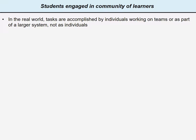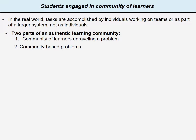The third component of authentic learning is that students engage in discourse and social learning in a community of learners. In the real world, tasks are accomplished by individuals working on teams or as part of a larger system, and not as individuals. In the case of authentic learning, there are two parts of the learning community: the first is a community of learners unraveling the problem, and second, the problems themselves are community-based.